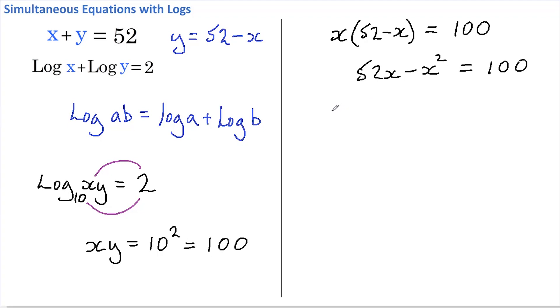Therefore 52X less X squared equals 100. And now if we rearrange, we get X squared minus 52X plus 100 equals 0.